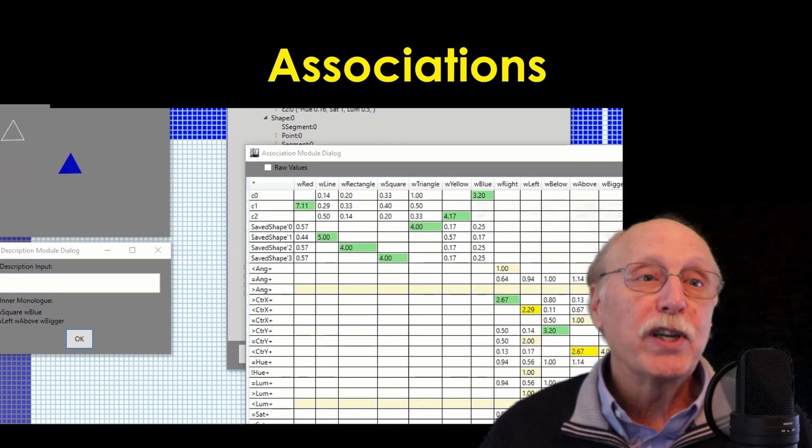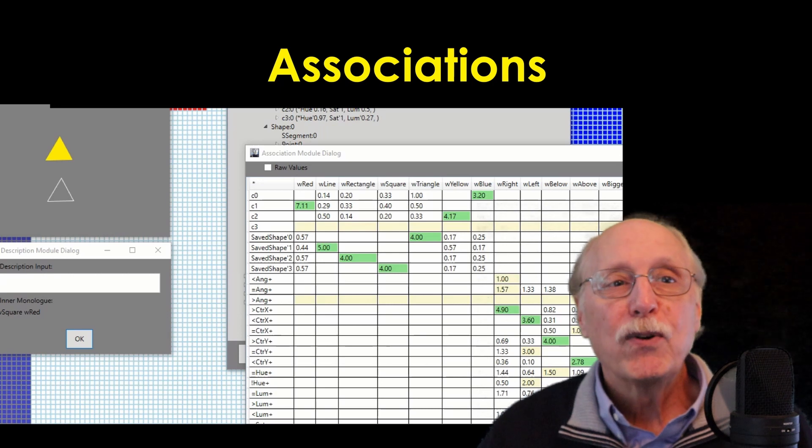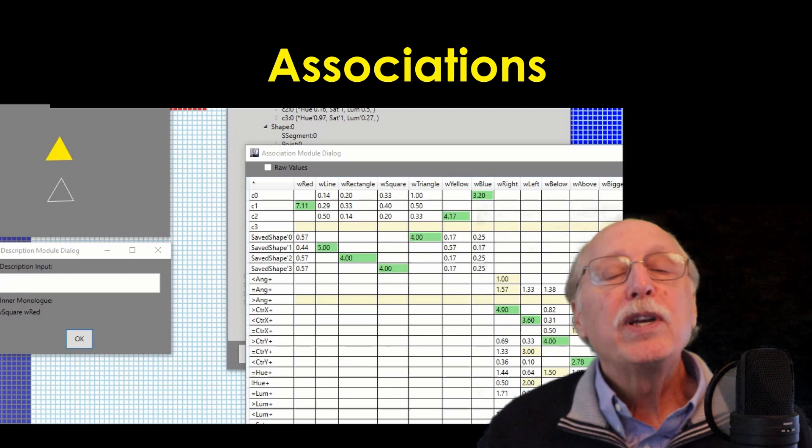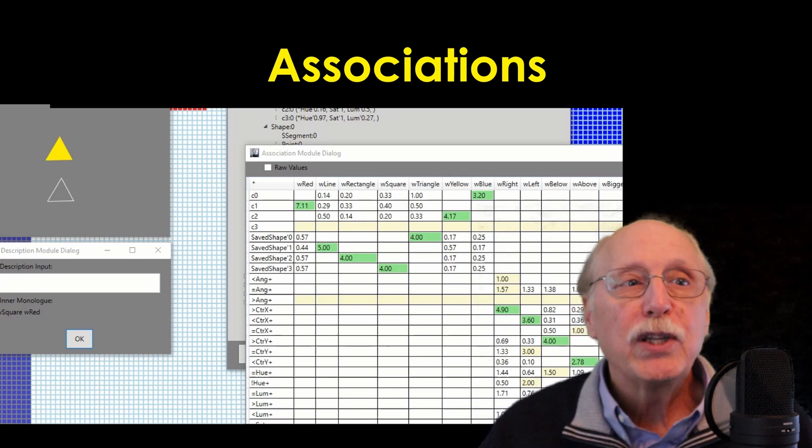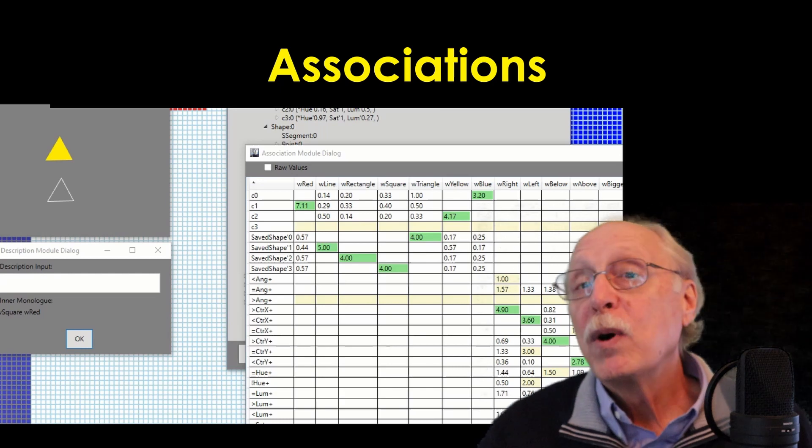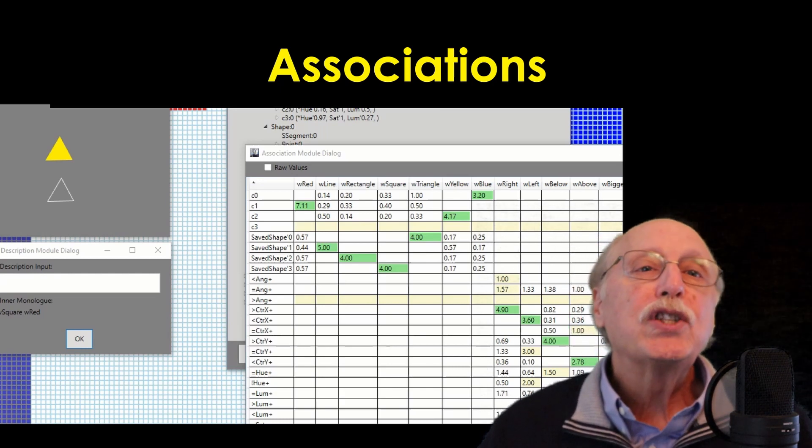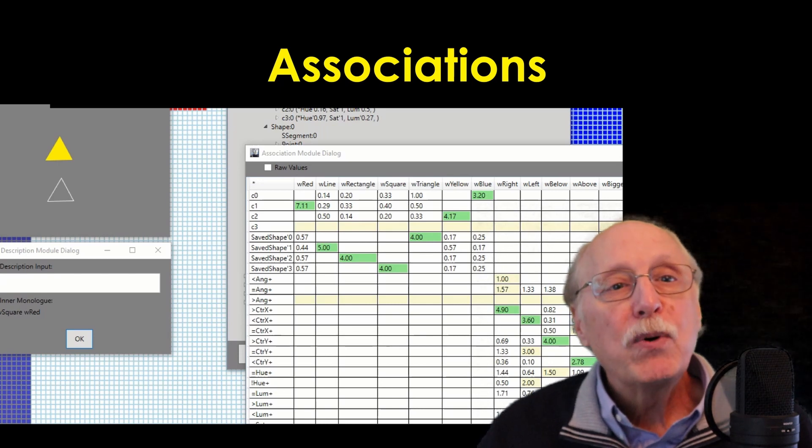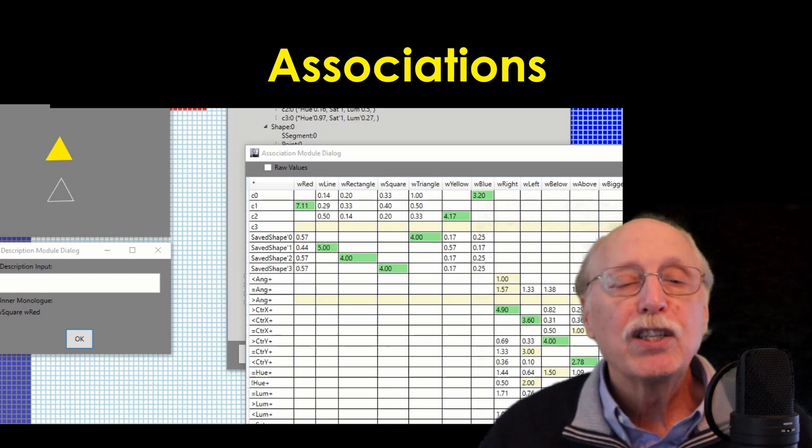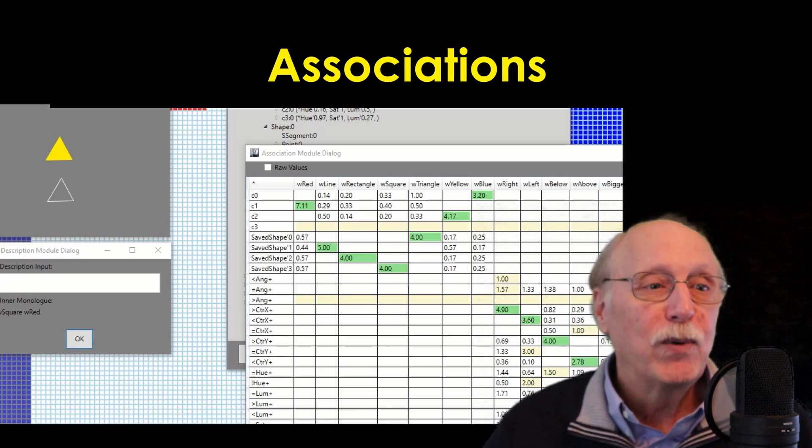This step simply builds or strengthens links between nodes which fire simultaneously and weakens those which don't. This is the essential definition of neuronal Hebbian learning, even though it's being performed on nodes and edges in a graph. After only a few presentations, the links will settle so that red must apply to the color while square must apply to the shape. There is an intrinsic ambiguity in the input data, but over time the hits and misses will strengthen the correct relationships and cancel out the incorrect ones.